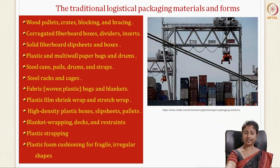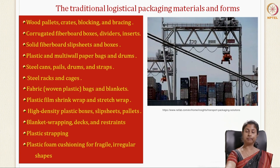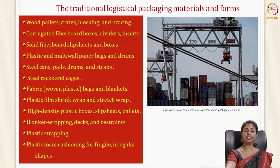Fabrics or woven plastics can be made into bags and blankets. Plastic film shrink wrap is another very popular transport packaging material. Others include high density plastic boxes, pallets, blanket wrapping and restraints, plastic strapping, and plastic foam cushioning for fragile and irregular shapes.